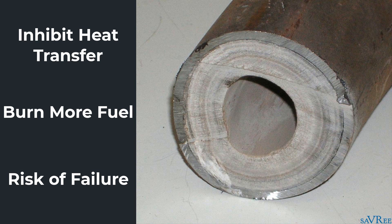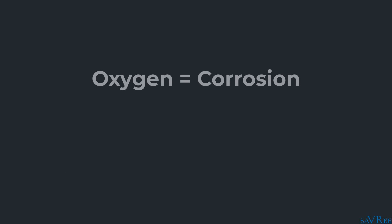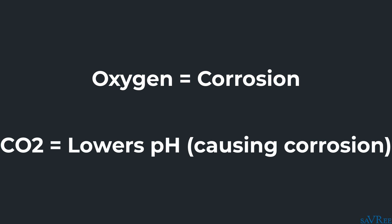Thus, we're risking failure of our boiler tubes, which we definitely don't want. There are other problems that can occur due to the contaminants within the water. Oxygen causes corrosion. CO2 can lower the pH of our water, making it quite acidic. So we want to remove oxygen and CO2 to remove those risks as well. The list of bad things that can occur due to all of these impurities in the water is quite long.